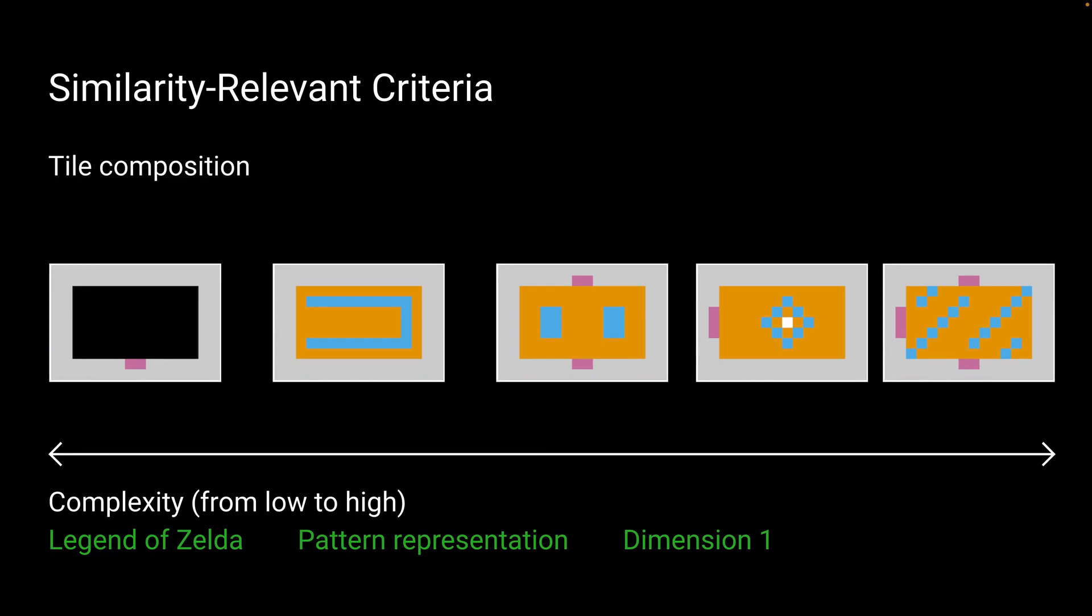Second is tile composition, where participants labeled this axis as complexity, from low complexity on the left-hand side, very few types of tiles, to high complexity of the pattern on the right-hand side.